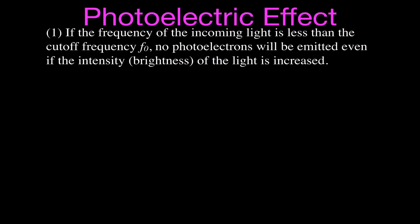We're going to go over three different points. Point number one has to do with the difference between the frequency and the intensity or brightness of the incoming light that we're shining on the plate to hopefully produce some photoelectrons. If the frequency of the incoming light is less than the cutoff frequency — symbol f₀ — then no photoelectrons will be emitted, even if the intensity of the light is increased.